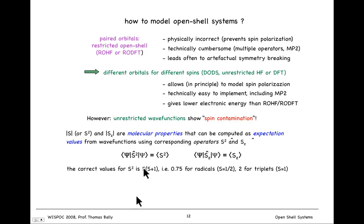If I evaluate for a given psi the expectation value of S squared, the correct values for S squared are S times S plus 1, where S is the sum of the spins of the open shell electrons. So for a doublet, which is what we've been considering, that's one unpaired spin, it's 0.5 times 0.5 plus 1 is 1.5, so S squared equals 0.75 because S is a half. S_Z equals a half. It is 2 for triplets because S equals 1, so you get 1 times 2 is 2.